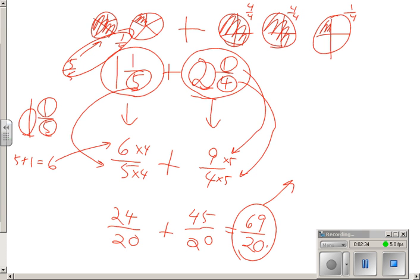So how many 20ths are there in 69? Well, there's 3 of them. That's my whole number. How many are left over? Well, 3 times 20 would be 60/20. So I have 9/20 left over.